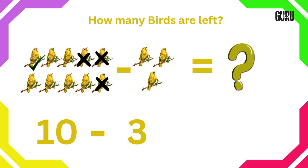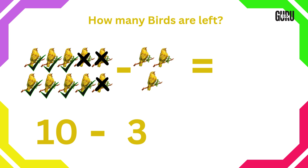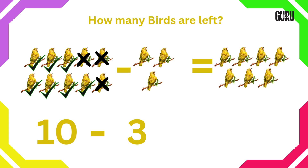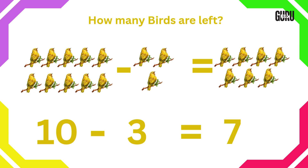1, 2, 3, 4, 5, 6, 7. Hence 7 birds are left. Therefore, 10 subtract 3 is 7.